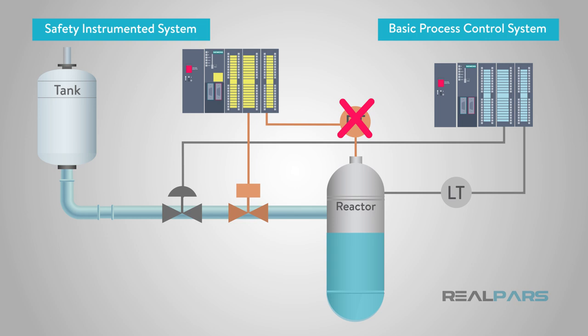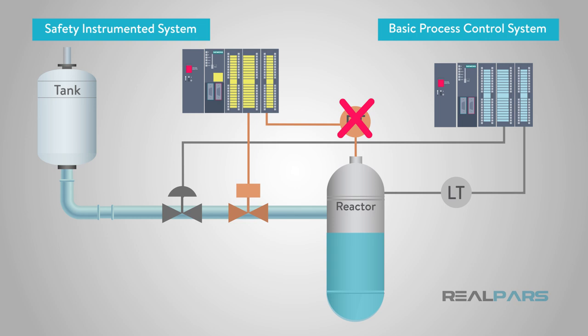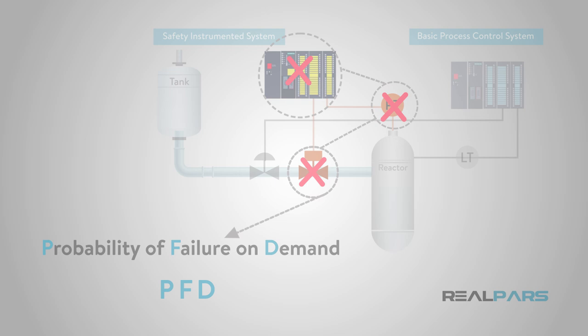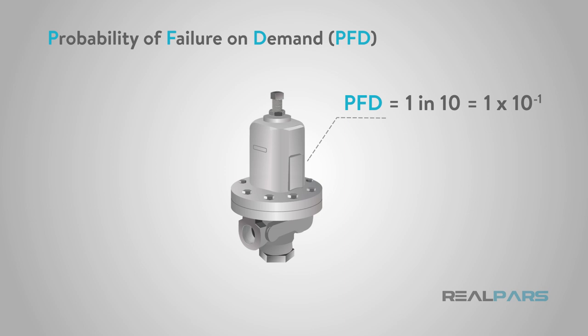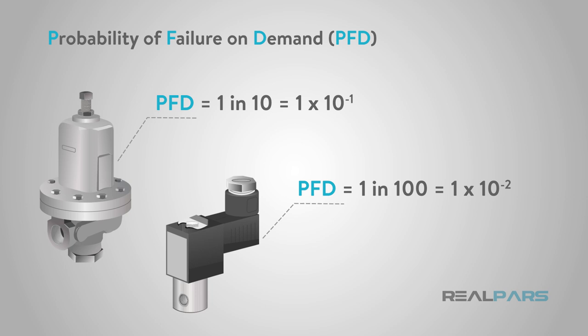Even a safety instrumented system has a probability to fail. What if the pressure sensor does not detect the high pressure condition? What if the isolation valve does not close when it is told to? The probability that a device — whether input, output, or logic solver — will fail, causing the SIF to not respond when called upon, is called the Probability of Failure on Demand, or PFD. For instance, a pressure regulator has approximately a 1 in 10, or 1×10⁻¹, probability of failure in a year's time. Failure of an isolation valve is about 1 in 100, or 1×10⁻². These values can be obtained from vendor data or from industry databases of typical PFDs for each type of device.